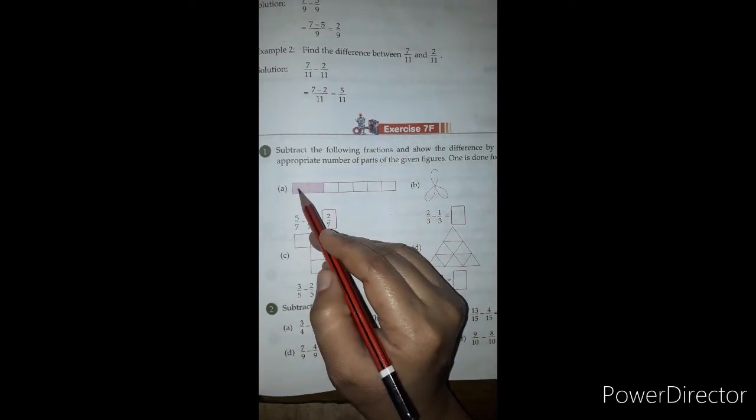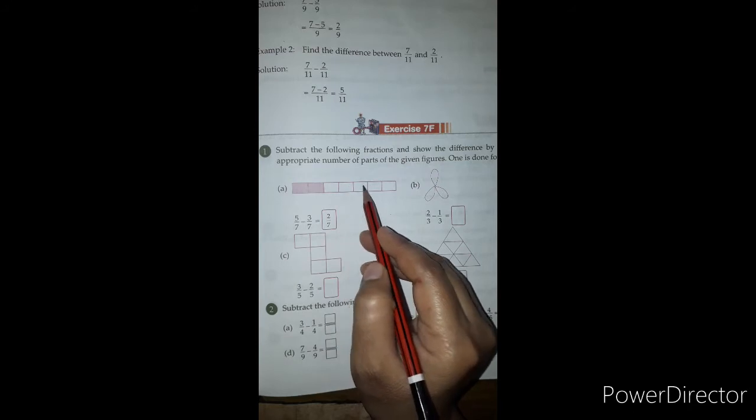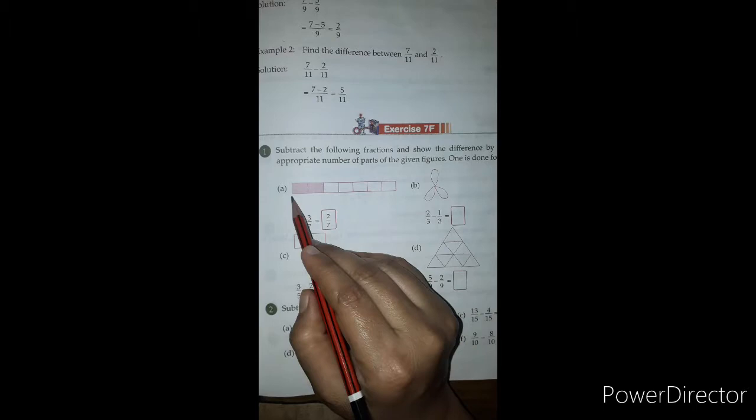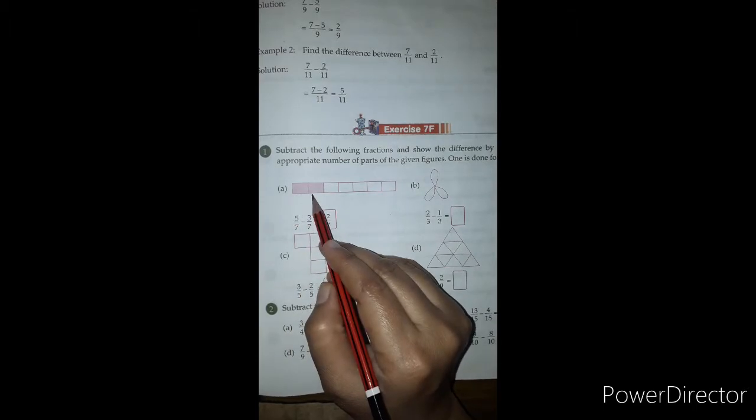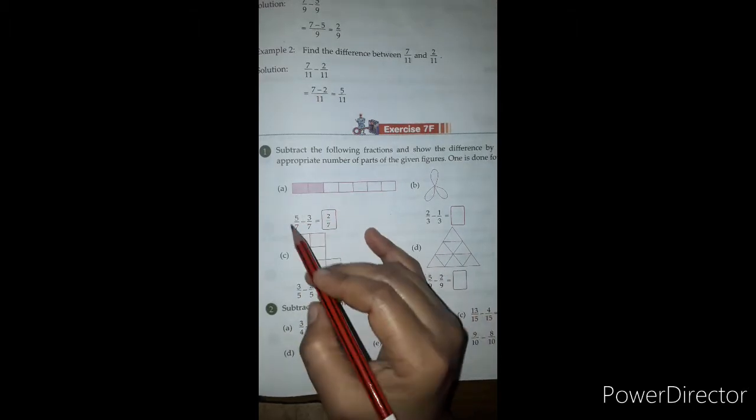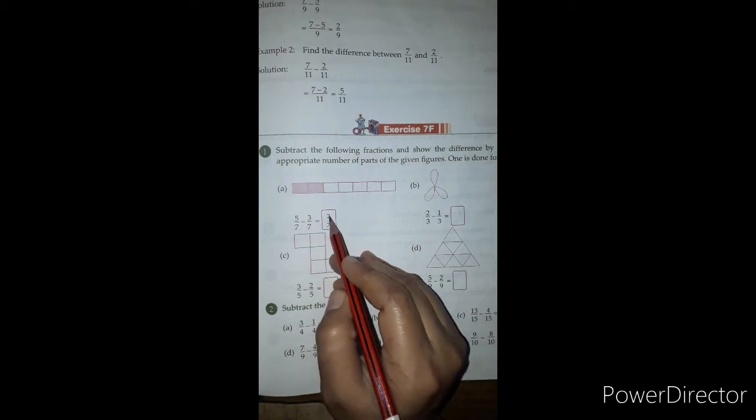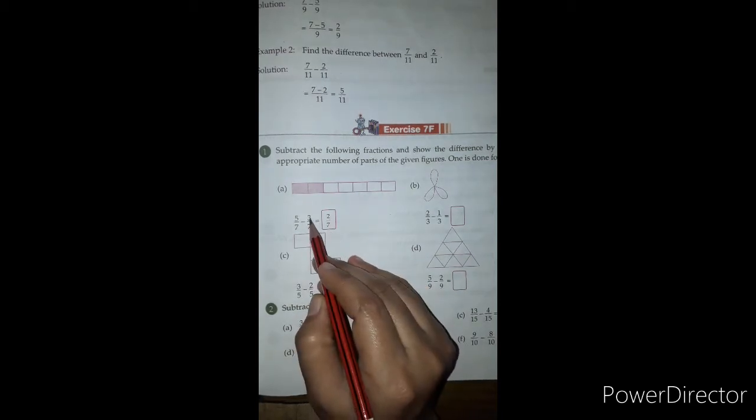...columns: 1, 2, 3, 4, 5, 6, and 7. Seven total, and 2 is our shaded part. The subtraction is 5 upon 7 minus 3 upon 7 equals 2 upon 7. We subtracted 3 from 5.